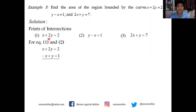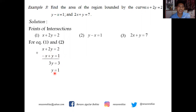For equations 1 and 2: x plus 2y equals 2, and negative x plus y equals 1 (rewriting equation 2). To eliminate x, I add the two equations: x plus negative x equals 0, 2y plus y equals 3y, and 2 plus 1 equals 3, giving y equals 1. Substituting y equals 1 back gives x equals 0. So the intersection of equations 1 and 2 is the point (0, 1).